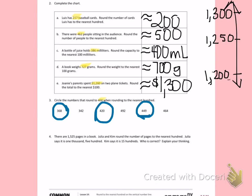Number 4, there are 1,525 pages in a book. Julia and Kim round the number of pages to the nearest 100. Julia says it is 1,500, Kim says it is 1,500. Who is correct? Explain your thinking. Let's first round 1,525 to the nearest 100.